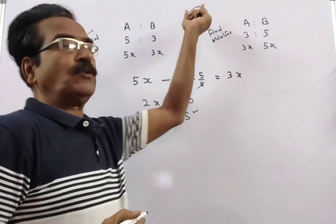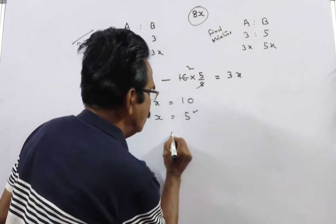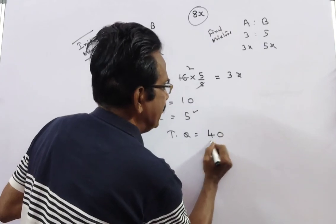Friends, we want the total quantity of mixture. That is 8x. Total quantity, 40 liters.